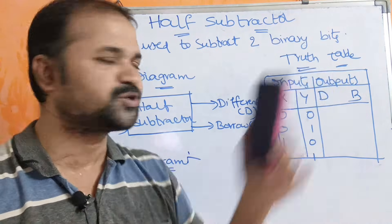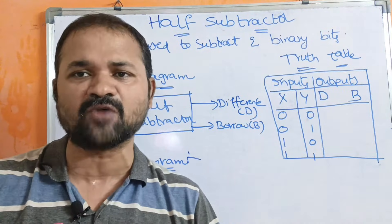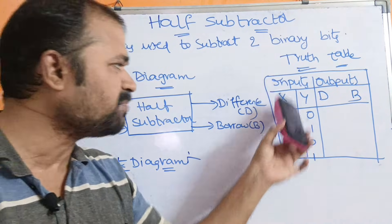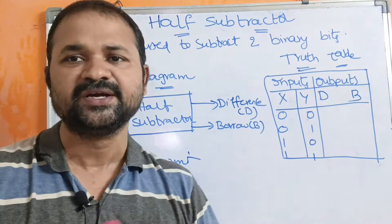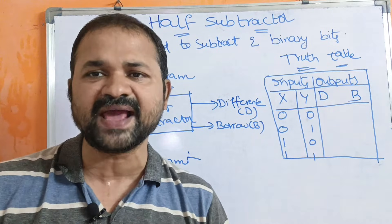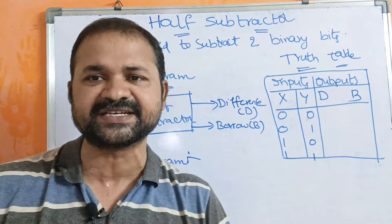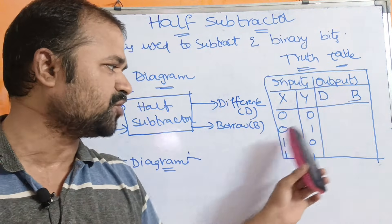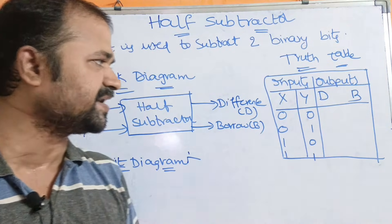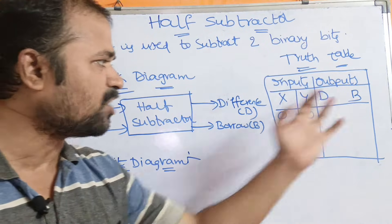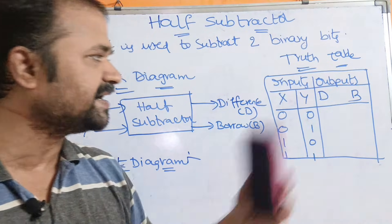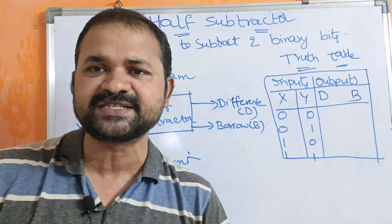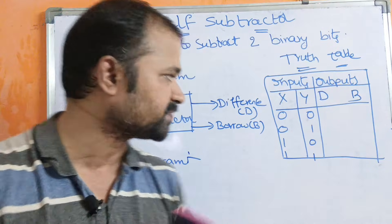Now let us see the truth table for the half subtractor. Here we have two inputs, so totally we will have four combinations: 00, 01, 10, and 11. The output bits are D and B, where D means Difference and B stands for Borrow.